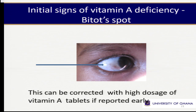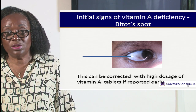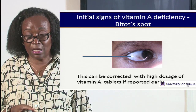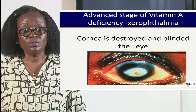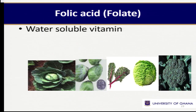The arrow on screen points to that white foamy patch on the eye. At this stage it can be reversed — the person should visit a physician who can prescribe vitamin A capsules. But if nothing happens, as the picture on screen shows, the eye is destroyed completely. That is no fault of the child, but of the parents who caused it through poor nutrition.